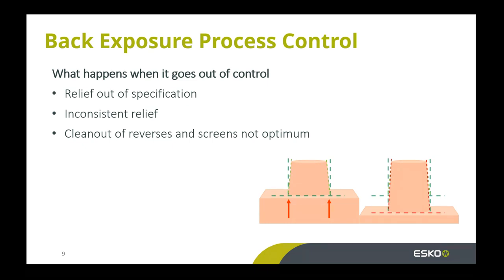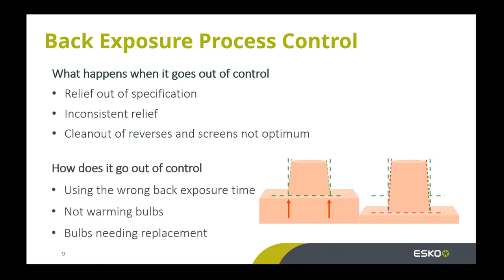The process control established here is very important - something we have to measure to make certain we're consistent on what we put on the plate. One of the most important things you can do when you make a printing plate is ensure it has a proper foundation, so proper back exposure is critical. If we're out of spec we may have trouble printing the plate, may have inconsistent relief - some dots in some areas that hold by happenstance and other dots in other areas that don't hold. We print inconsistently, have inconsistent pressures on the plate, and end up with something a customer sends back. The other side could be that the reverses are filled in and dirty.